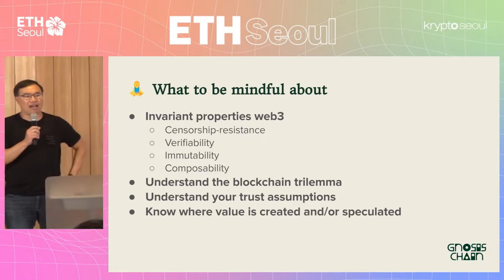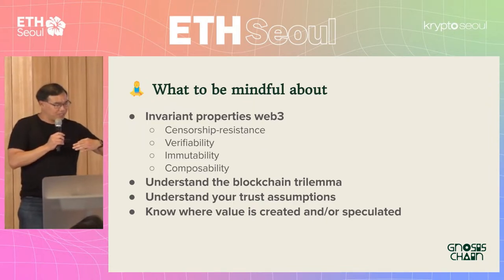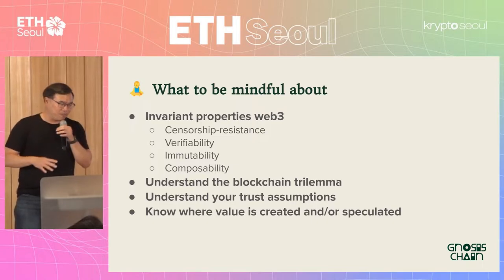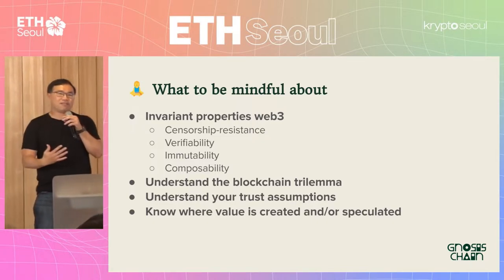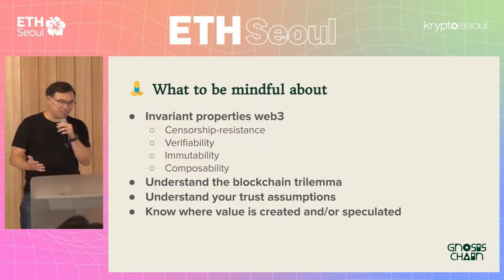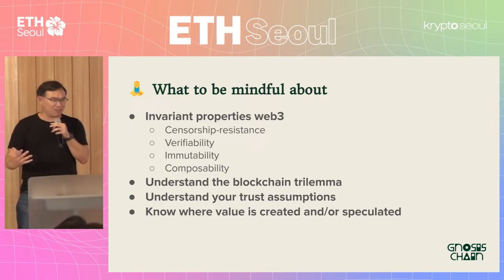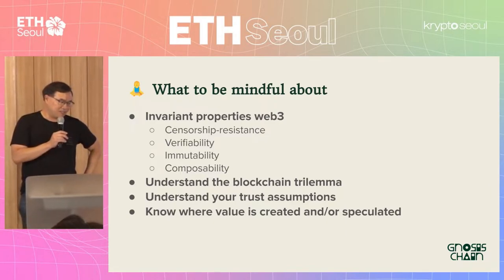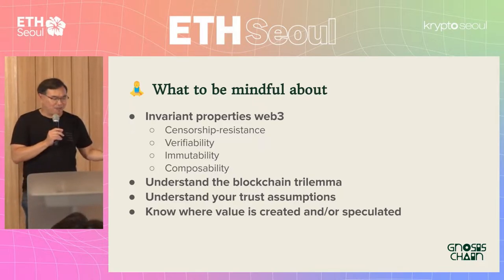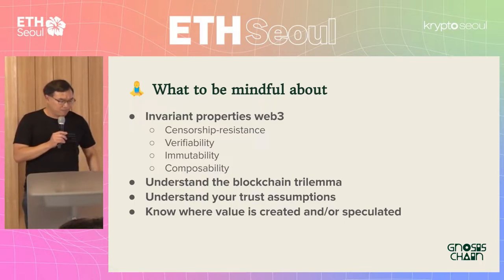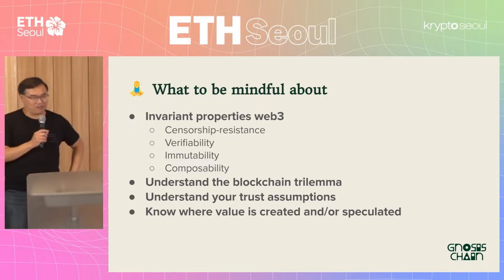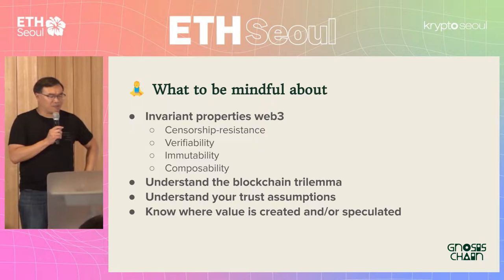Also important is the blockchain trilemma. There are three properties of blockchain — security, decentralization, and scalability — and you can't have all three at once; you have trade-offs between them when building a decentralized blockchain or app. I encourage you to search for the blockchain trilemma; Vitalik wrote an article about it and many others have since. Understanding trust assumptions in your platform is also important — what are you giving up in terms of trust?